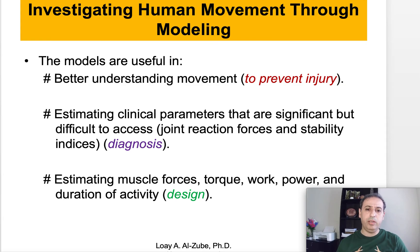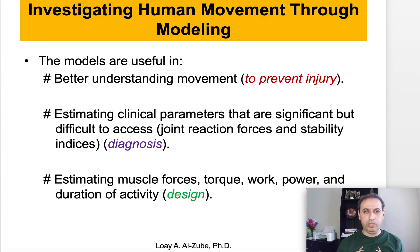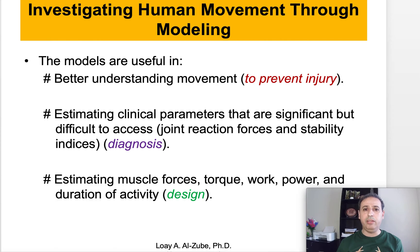Another important use of modeling is estimating clinical parameters that are significant but difficult to assess. As an engineer, if we are talking about mathematics, numbers, and quantities like position, velocities, and acceleration of human motion, there are some quantities that are very difficult to assess directly. For example, the forces on the joints in a specific motor task — we call these joint reaction forces. Those are difficult to assess directly from subjects. Models are also useful for measuring stability indices, which are also difficult to assess directly. Mathematical models help in diagnosis by giving us quantities we cannot attain through regular clinical assessment.